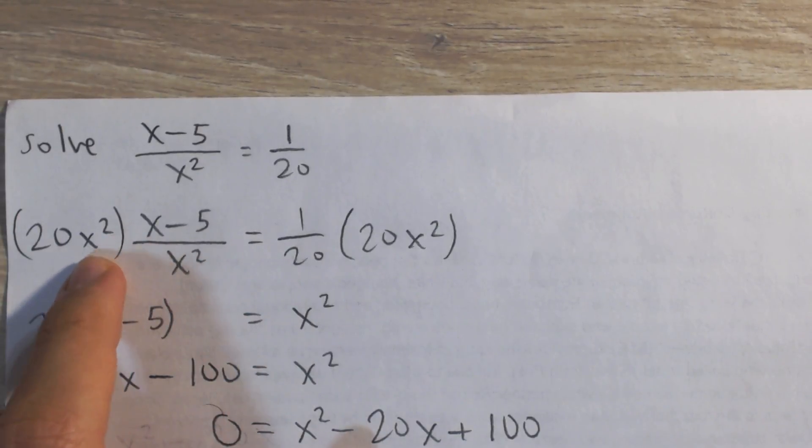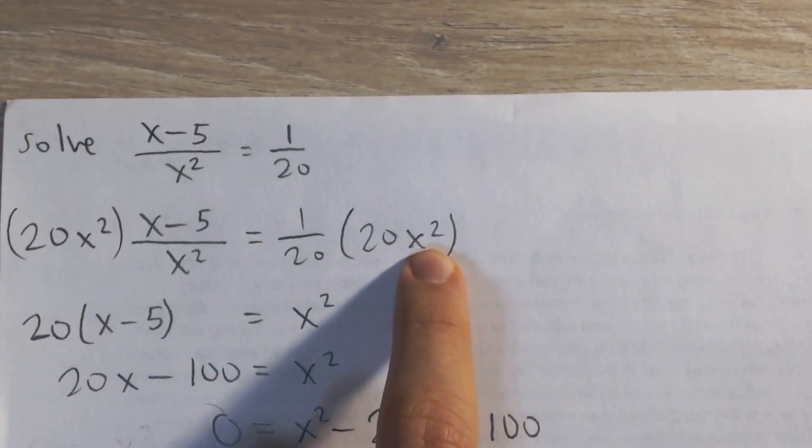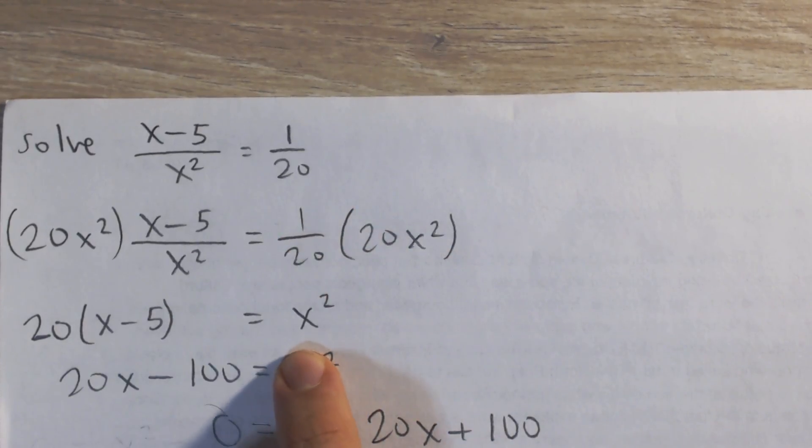And so you can see on the left side here, the x squared will cancel like I wanted, and I'll be left with 20 times x minus 5 right here. And on the right, the 20s will cancel like I wanted, and I'll have x squared times 1, which is x squared.